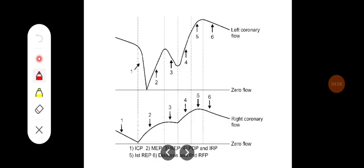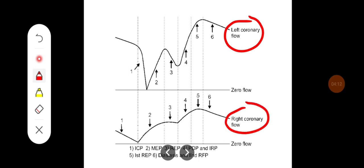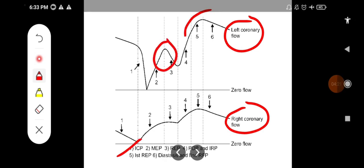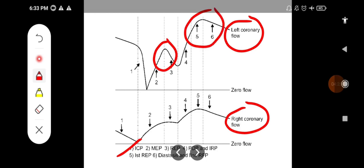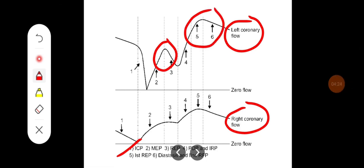This diagram shows the coronary circulation of the left coronary artery and the right coronary artery during different phases of the cardiac cycle. During systole, blood flow is reduced, and during diastole, blood flow is increased compared to the right coronary artery.